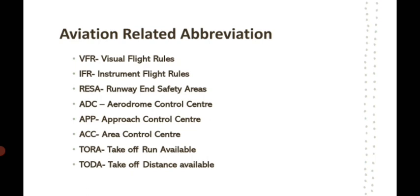VFR is Visual Flight Rules and IFR is Instrument Flight Rules. Under VFR, an aircraft flies by seeing around — seeing the terrain and the skies, just like driving a car. Under IFR, the aircraft flies with the help of instruments, tuning to navigational aids. VFR is mostly used by military and small aircraft, while commercial aircraft generally fly under IFR. These will be discussed in more detail later.